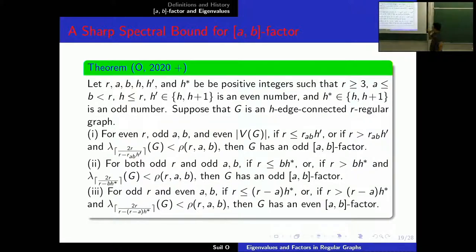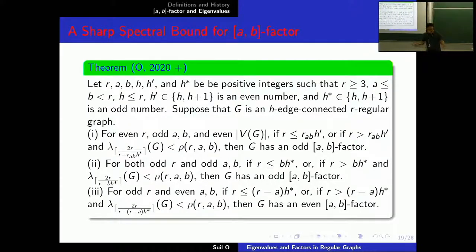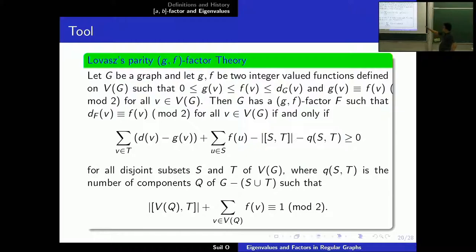And also, this paper is to celebrate my baby's first birthday. So, how can I prove this? I need to use the Lovász GF factor theory. But especially, since we want to have an odd A-B factor or even A-B factor — we want to have the same parity pattern — we actually want to use Lovász's parity GF factor theory.